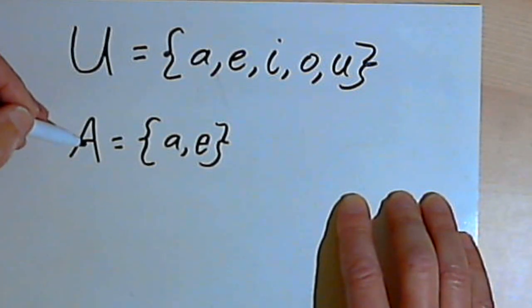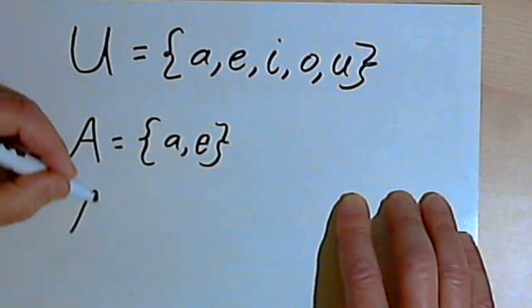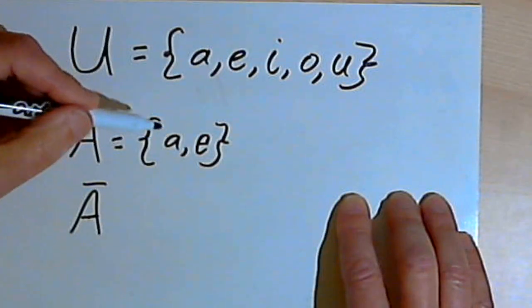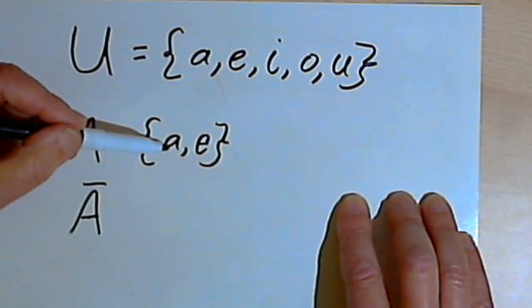From this subset, I can create another subset which I'm going to call the complement of A. The complement of A, which is going to be written as a capital A with a line over it, is going to be all of the letters in the universal set that are not in A.